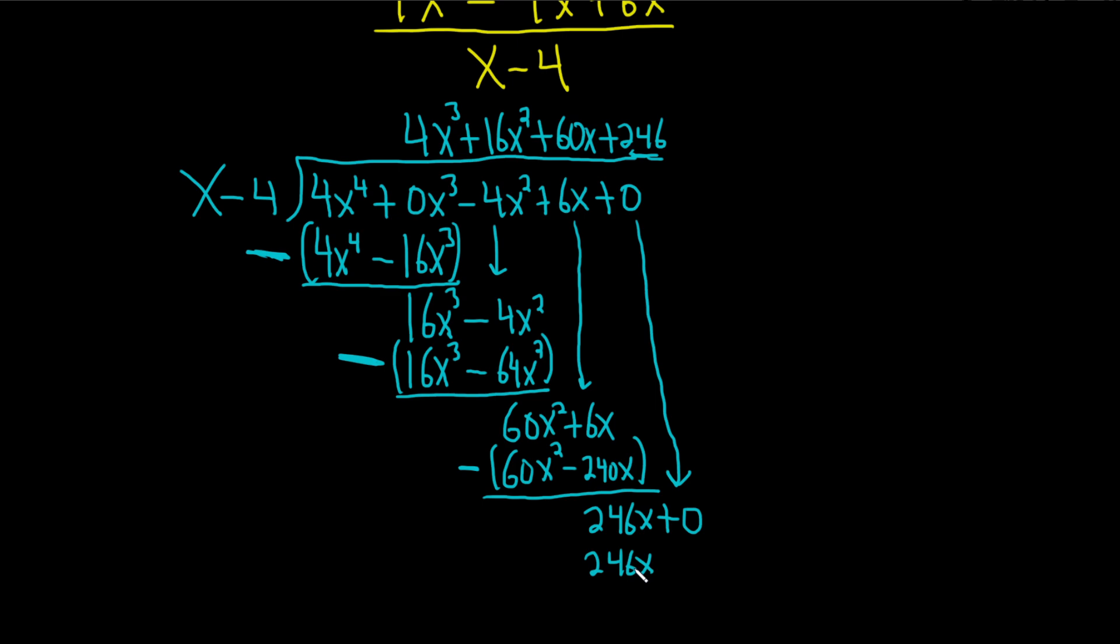Then 246 times x is 246x. And then 246 times negative 4, I'm going to get my calculator for this one just to be sure. Negative 984. Big numbers. Parenthesis, giant minus sign. And then you add. These cancel. And this becomes a positive 984. So this is the remainder.